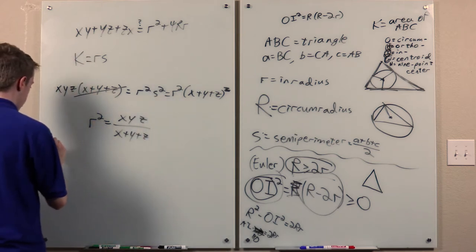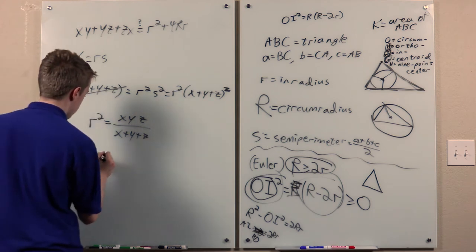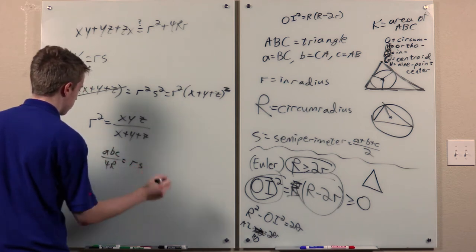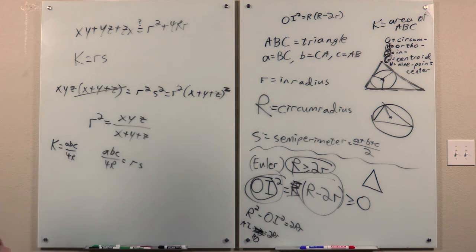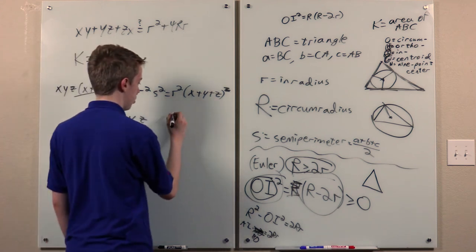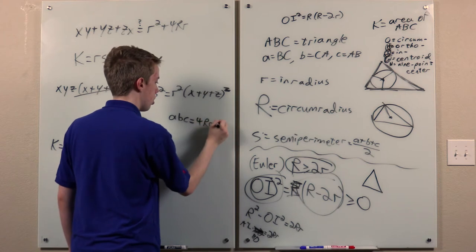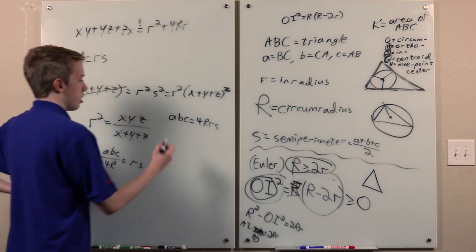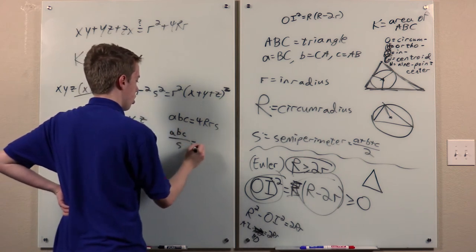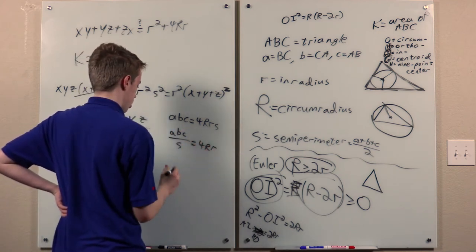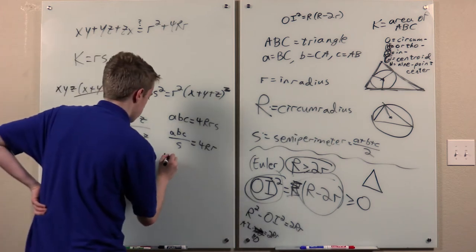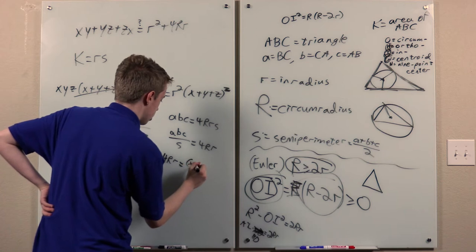Furthermore, we also know that the area is this. So as I said earlier, we get this. Which also gives us the formula for a, b, c in terms of r, r, and s. But then we can also get 4rr from this. So 4rr is...